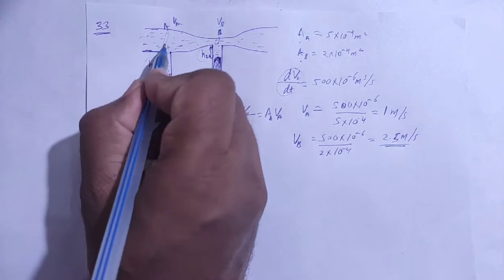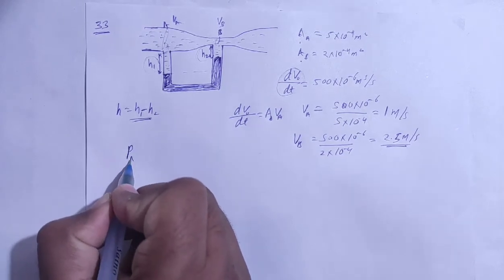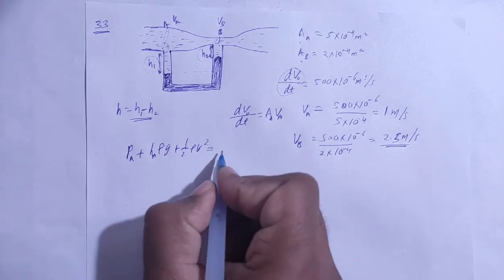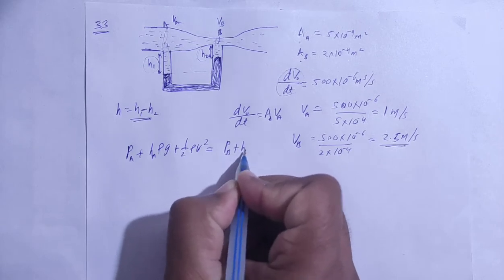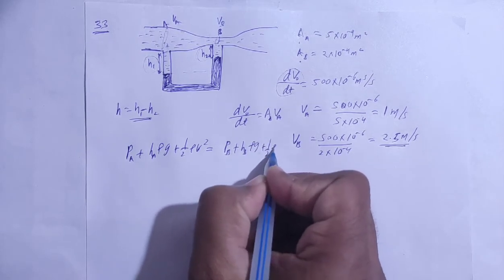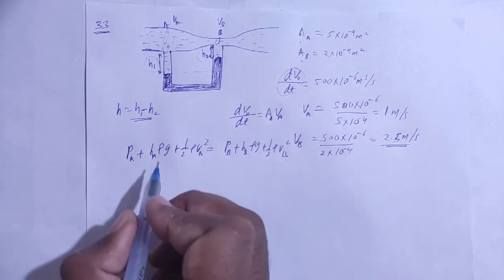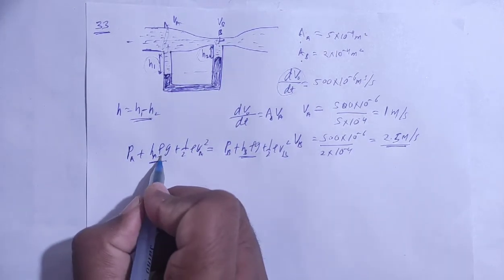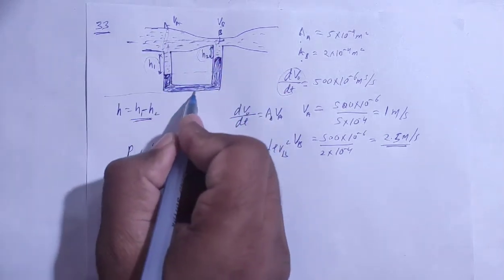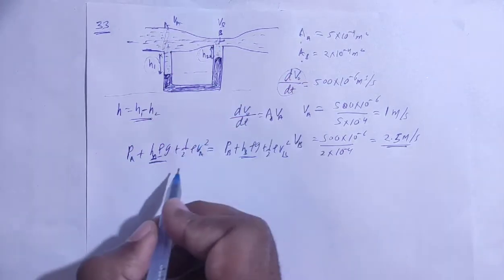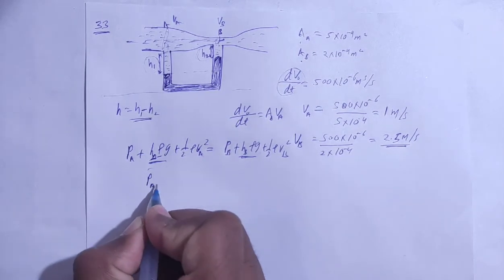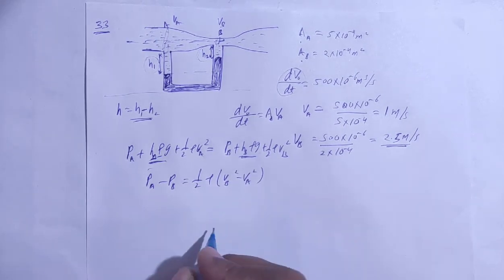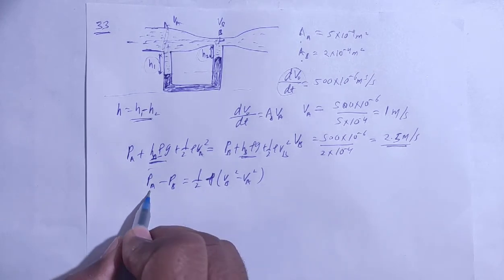Now apply Bernoulli's equation between A and B: PA + ρgh_A + ½ρVA² = PB + ρgh_B + ½ρVB². Since A and B are at the same level, the height terms ρgh cancel out, giving us PA + ½ρVA² = PB + ½ρVB², or PA − PB = ½ρ(VB² − VA²).